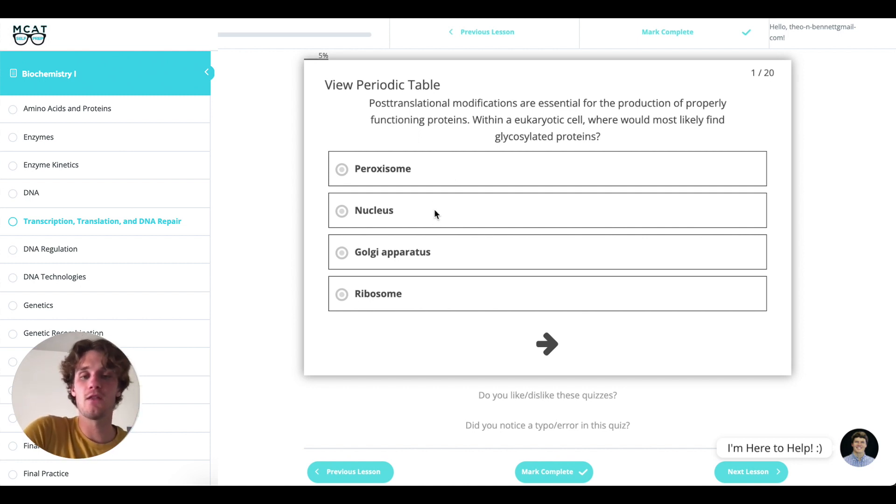The nucleus of course every protein is going to ultimately have to start in the nucleus as DNA and mRNA. Ribosomes also totally get used with every protein so that can't be it. And just like we talked about it's going to be the Golgi apparatus.